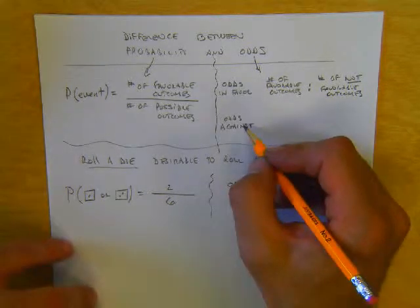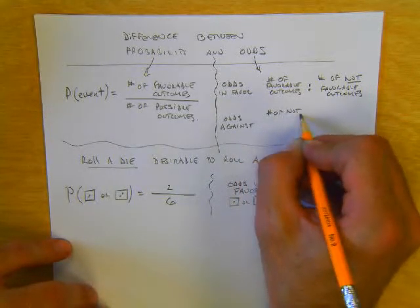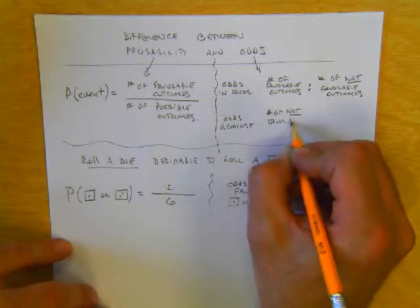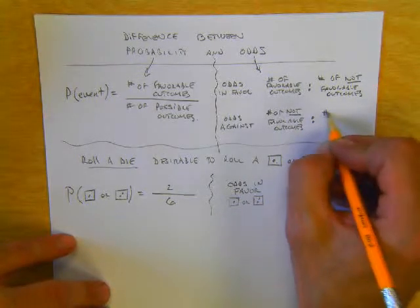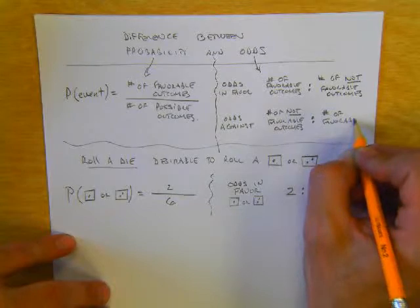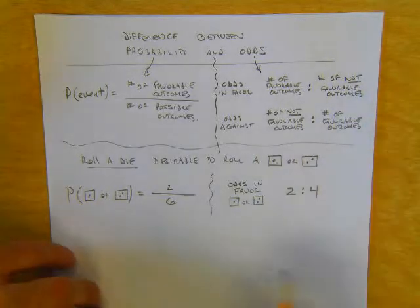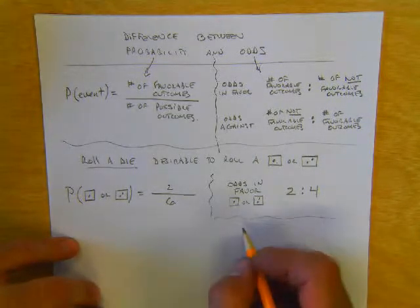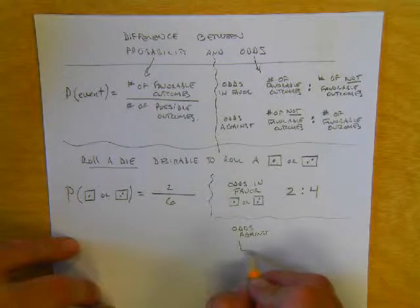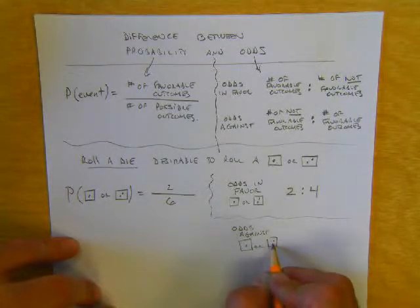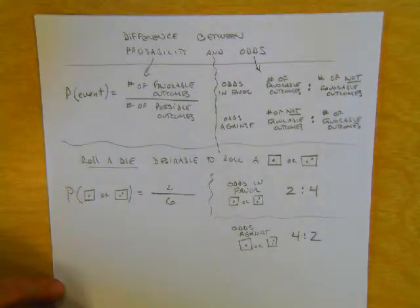Odds against work like this: the number of not favorable outcomes to the number of favorable outcomes. It's like odds in favor, but reversed. In our die example, if we wanted odds against rolling a one or a two, there would be four not favorable outcomes to two favorable outcomes.